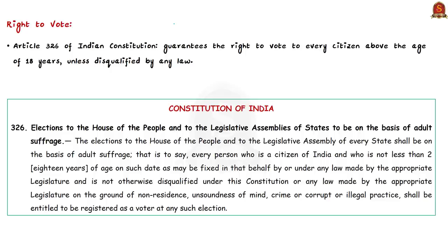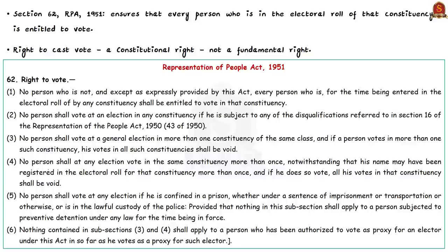Article 326 of the Indian Constitution guarantees the right to vote to every citizen who is 18 years of age unless disqualified by any law. Apart from this, Section 62 of the Representation of People's Act of 1951 also ensures that every person in the electoral roll of that constituency is entitled to vote. The right to cast a vote is a constitutional right, though it is not a fundamental right. The Election Commission of India has also said that the right to vote is a statutory right.